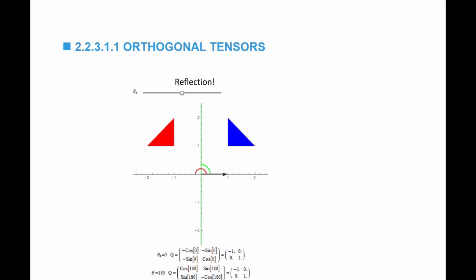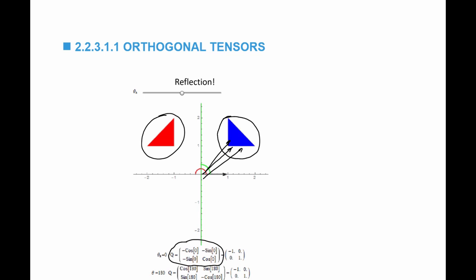The second function of orthogonal tensors is reflection. For example, you have a triangle in a two-dimensional vector space. If I multiply every vector in that triangle by this orthogonal tensor, I will get this new reflected image of the original triangle.